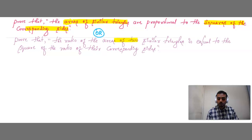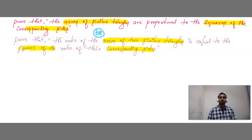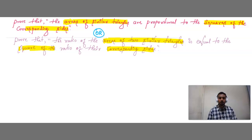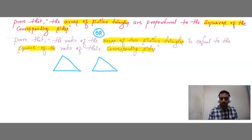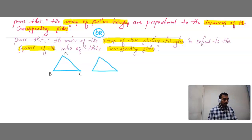Again: areas of similar triangles, squares of the corresponding sides — both sides of the statement. Now let me start solving the theorem. We have to prove the areas of two similar triangles. Let me take two similar triangles — this is one triangle and this is another triangle.